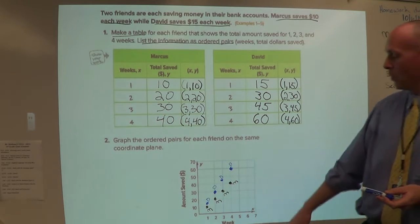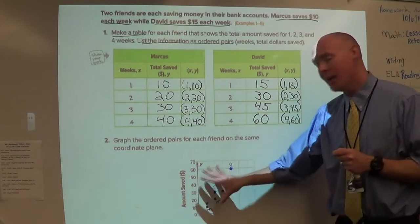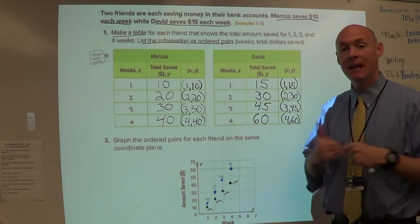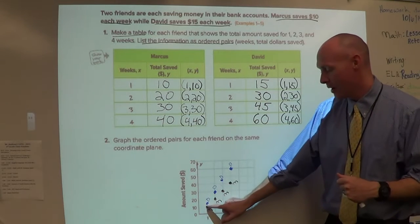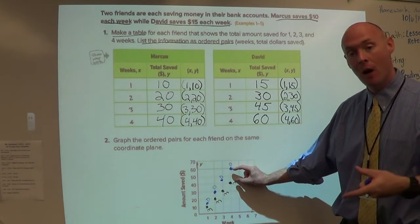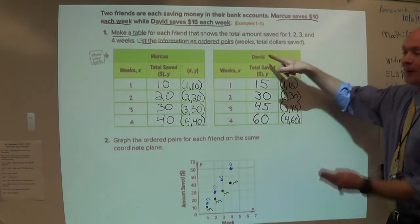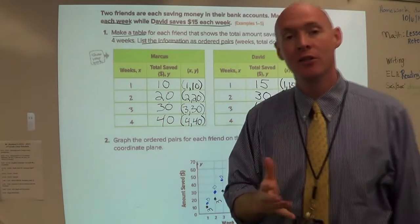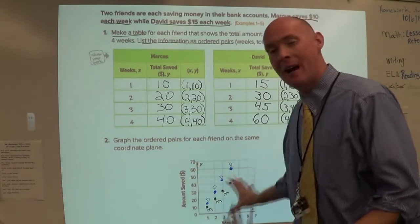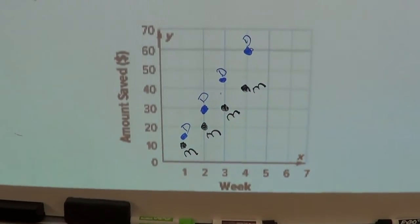Graph the ordered pairs for each friend on the same coordinate plane. Boom, there it is. Now, what does this information tell us? Well, looking at a graph is good because we can see right away that, wow, David is starting to save a lot more money. Notice how the numbers are pretty close in the beginning, but then they get a little further, a little further, a little further. And then you can imagine if the graph kept going, if we went on to week five and week six, they would get further and further separated, showing that David is a much better saver than Marcus. Now, I'm going to zoom in on the camera just so you can get a better look at my graph. I know it's kind of tight on yours, so just make sure your graph kind of looks like this. On to the next one.